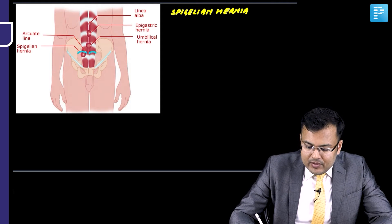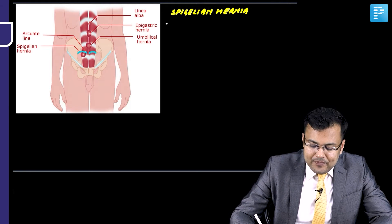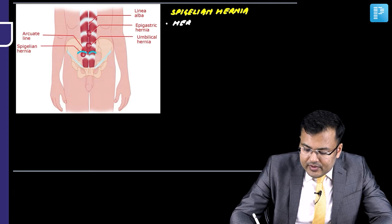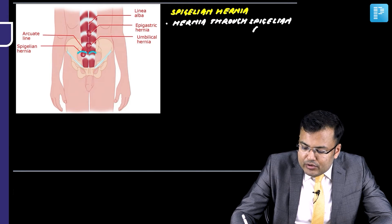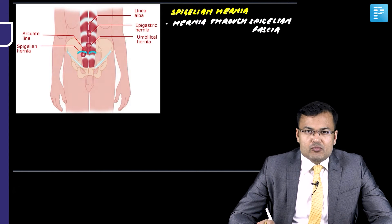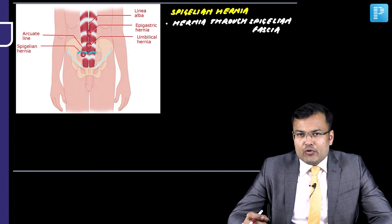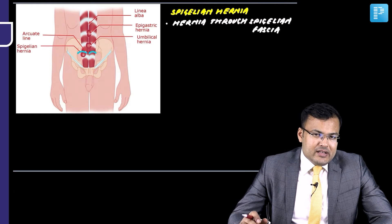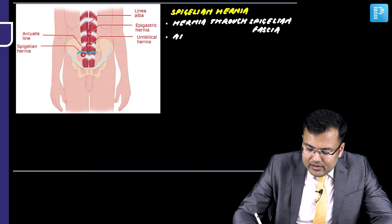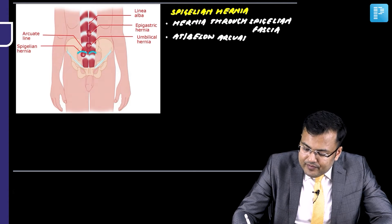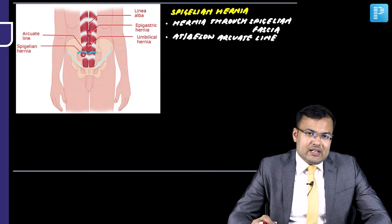So, hernia occurs through the spigelian fascia, and the location is in the infra-umbilical region. If you see Bailey, in Bailey it is wrongly written that it is located above the arcuate line. The correct location is in the infra-umbilical region, at or below the arcuate line. You can see the location here — it is at or below the arcuate line.